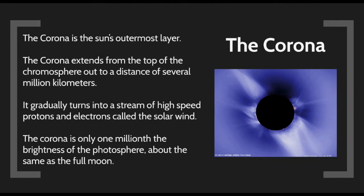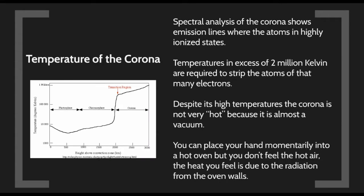Outside the chromosphere, we go through a transitional phase and reach the corona. This corona is the Sun's outermost level. It can reach out for distances of several million kilometers and eventually turns into a high-speed gas of protons and electrons we call the solar wind. The corona is only one millionth the brightness of the photosphere, about the same brightness as the full moon. If the Sun is there, you cannot see it. You'll only see the corona during a total solar eclipse or with special equipment.